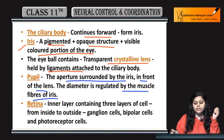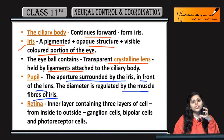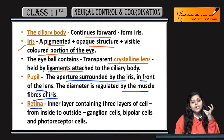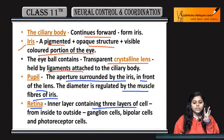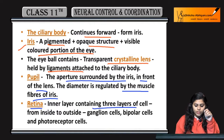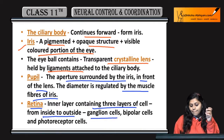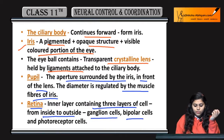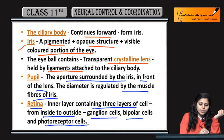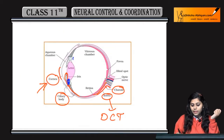The pupil's diameter is regulated by the muscle fibers of the iris. Next is the retina, which is the inner layer containing three layers of cells. From inside to outside: ganglion cells, bipolar cells, and photoreceptor cells are present in the retina.